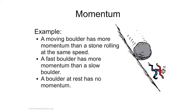See if this makes sense to you. A moving boulder has more momentum than a stone rolling at the same speed, because a boulder weighs more than the stone. Since it has more mass it will have more momentum at the same speed. A fast boulder has more momentum than a slow boulder. Even though the masses are the same, if the speed is higher you're going to get a higher momentum. A boulder at rest has no momentum, and that is what you must remember. Momentum is a product of mass times velocity. Even if you have a huge mass, if it's not moving it has zero velocity. A million times zero is still zero. Something not moving has no momentum. Something that is moving does have momentum.